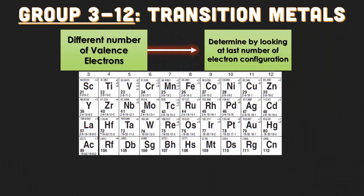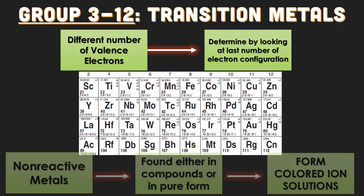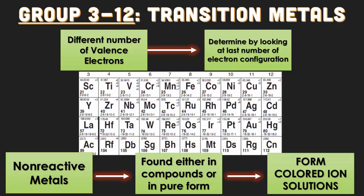Group 3 to 12 is what we call the transition metals. The transition metals all have different numbers of valence electrons, and you can determine that by looking at the last number of the electron configuration. They're generally non-reactive metals, meaning they don't explode in water. They're either found in compounds or in a pure form, and when they are in an aqueous liquid solution, that solution is going to be colorful. Also, because this is the D-block section, they can lose more than just their valence electrons, which is why they have more than just one positive charge. For example, manganese (Mn), which is number 25, has four different positive charges.